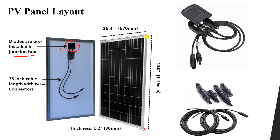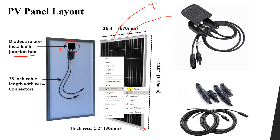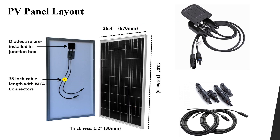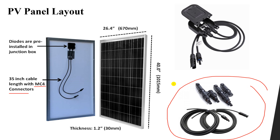The junction box contains the positive and negative terminals of the panel. Any PV panel has two terminals — positive and negative — which we use to connect to another panel or to take the output power. In this figure, you can see a type of cable called MC4 connectors, which are used to connect between two panels to form a string or in parallel.